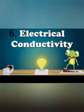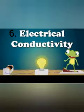Next is electrical conductivity. Metals such as silver and copper are excellent conductors of electricity. Due to the high electrical conductivity of copper, it is used in manufacturing good quality electrical wires. Besides all the metals, lead is the only metal which is a poor conductor of electricity.